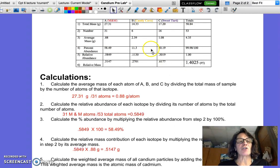As you look at the procedure, the first thing you're going to do is count the number of each. So of all of the pieces of candy in the cup that I received as my lab group, I had 31 M&Ms, 6 candy corn, and 16 sweet tarts, for a total of 53 atoms in that sample.